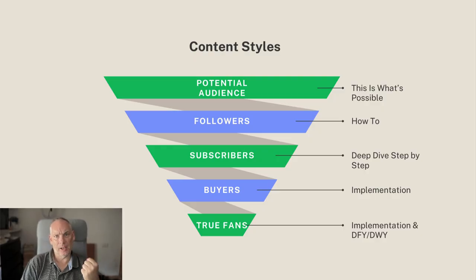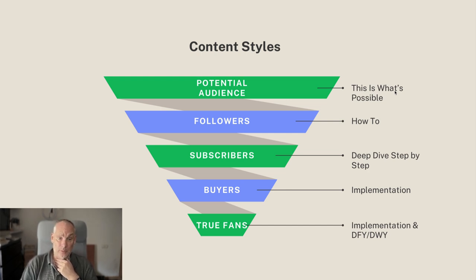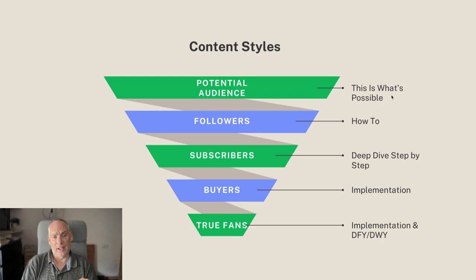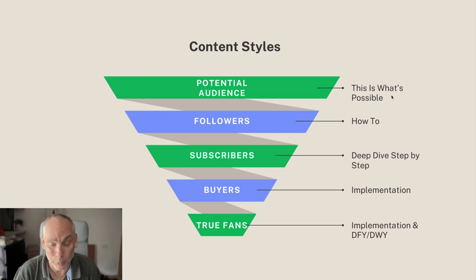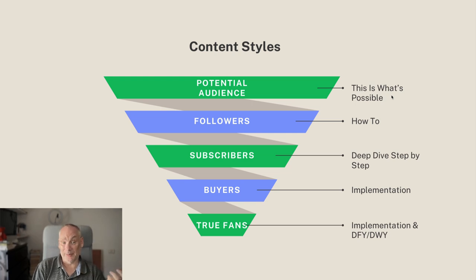Here's the type of content you should do at each stage. For your potential audience, create articles showing what's possible — show results you've had and results others have had. A quick note: if you follow somebody making good income and showing what's really working, you can use that in your content. For example, I saw a guy today making $100,000 a month from an affiliate program — I could talk about that. It doesn't have to be your income.